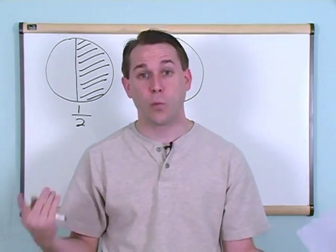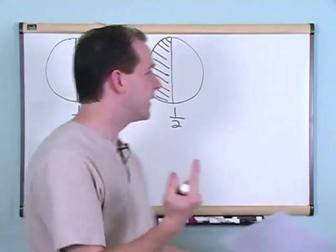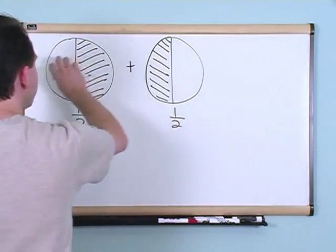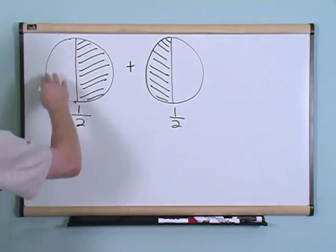Well, you're going to have one whole pie, right? Because here's half of a pie, here's another half of a pie. If you put them together, you can see that you could kind of put this inside here and you would have one whole pie.